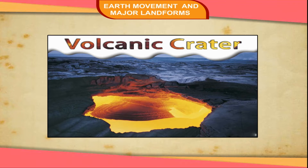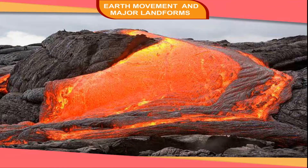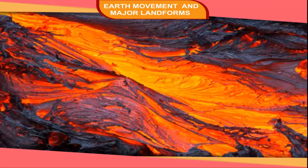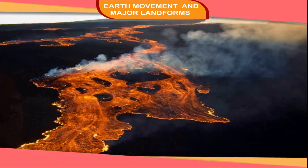A volcanic eruption along a linear crack, called a fissure, is called a fissure eruption. The whole process of ejection and solidification of lava is called volcanicity. So long as the hot liquid material of the volcano remains within the surface of the Earth, it is called magma. But when this magma rises to the surface of the Earth, it is called lava.